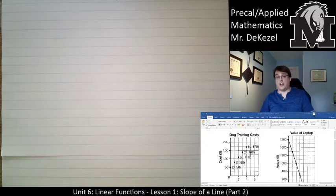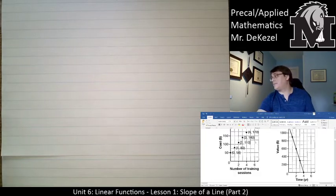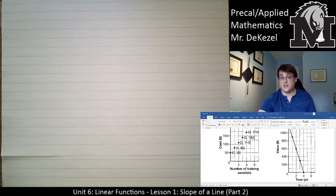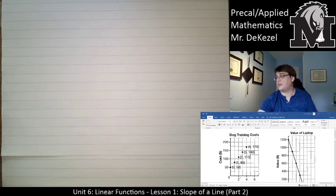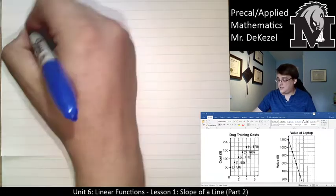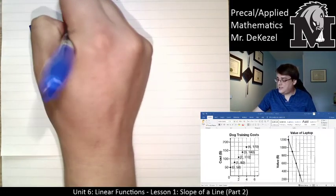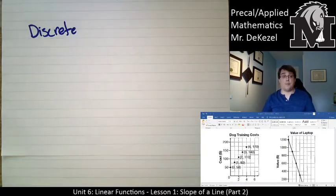So, on the left we have dog training costs. So, on the bottom is the number of training sessions. So, you can't have half a training session. You can't have 0.98 of a training session. You only have 1, 2, 3, 4 training sessions. So, dog training costs is something that would be considered discrete data because you can't have a part of a training session. The first one is $50 and then you add $30 after that for each of your training sessions.